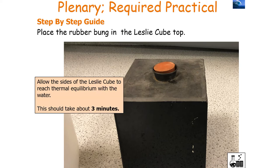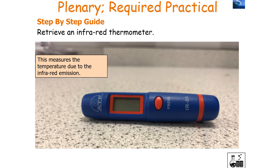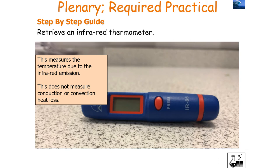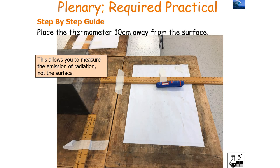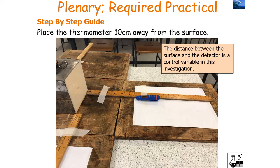Allow the sides of the Leslie cube to reach thermal equilibrium with the water, which takes about three minutes. Then retrieve an infrared thermometer, which measures temperature due to infrared emission — it does not measure conduction or convection heat loss. Point the thermometer at the surface you wish to measure and press the red button once to record the temperature. Place the thermometer 10 centimetres away from the surface to measure the emission of radiation rather than the surface temperature. The distance between the surface and the detector is a control variable and should be the same for all four surfaces.